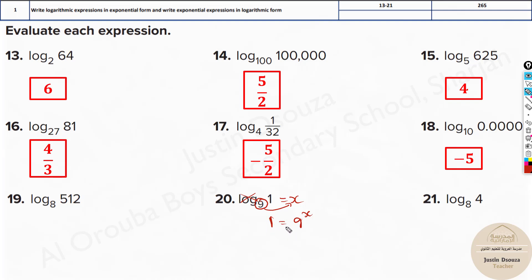So when is 1 equal to 9 to the power, how much power? So x is 0, right? 9 to the power 0 is 1. So x can be 0.